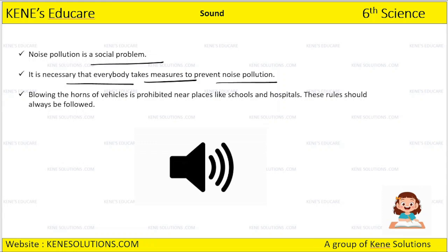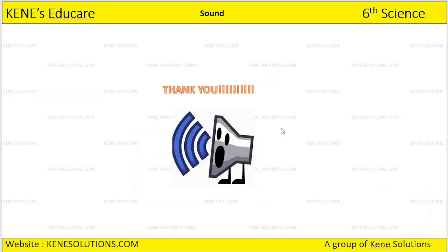Blowing horns of vehicles is prohibited near places like schools and hospitals, and this rule should be followed. Students should not be disturbed, and patients in hospitals should not feel discomfort due to noise pollution. In this session we have considered a complete study of sound — what sound is, how it is produced, what noise is, and what measures can be taken to prevent noise pollution. We have successfully completed this chapter. Thank you.